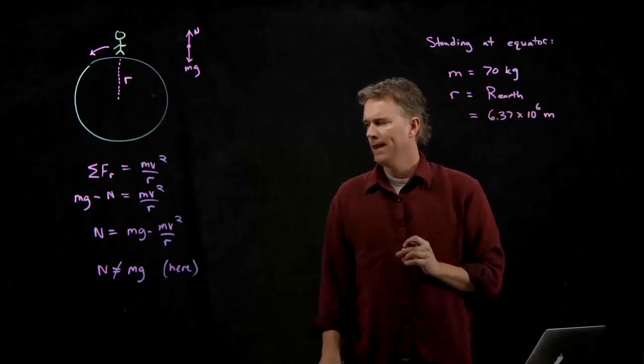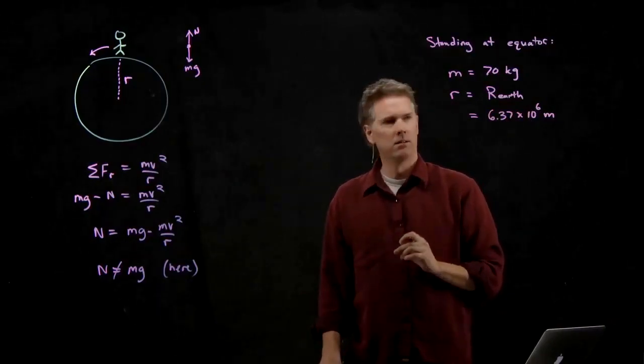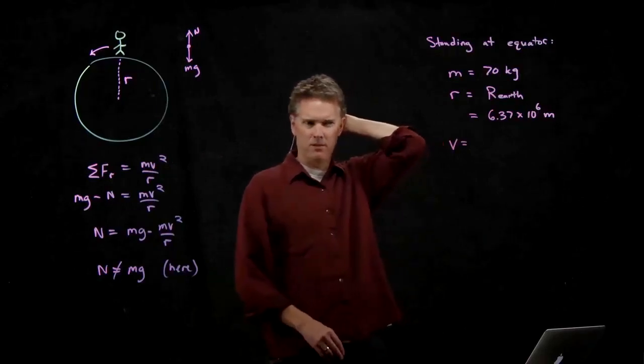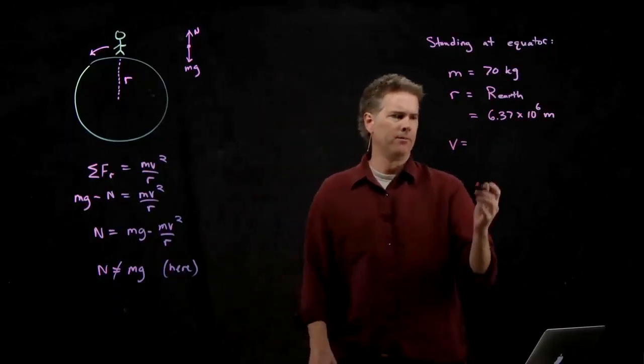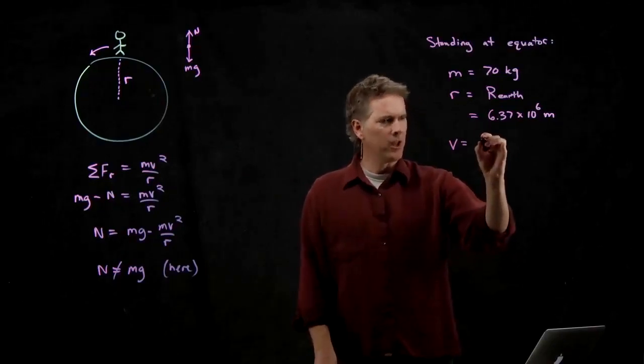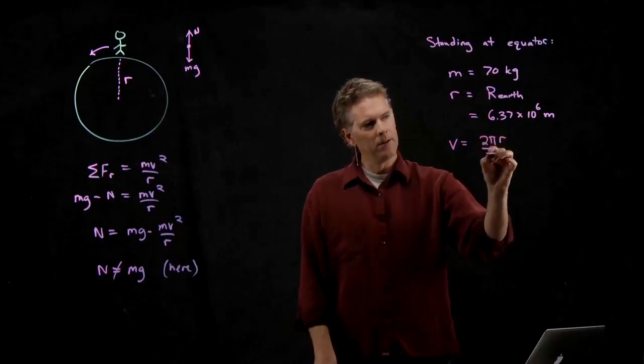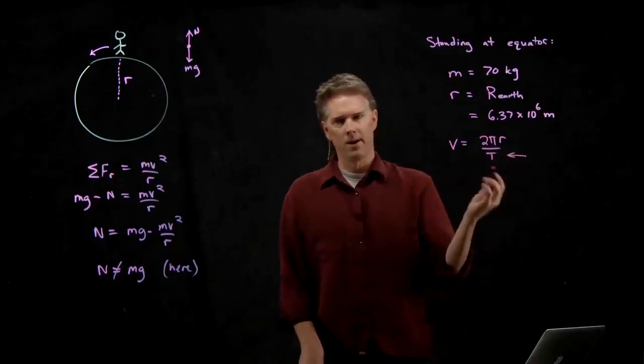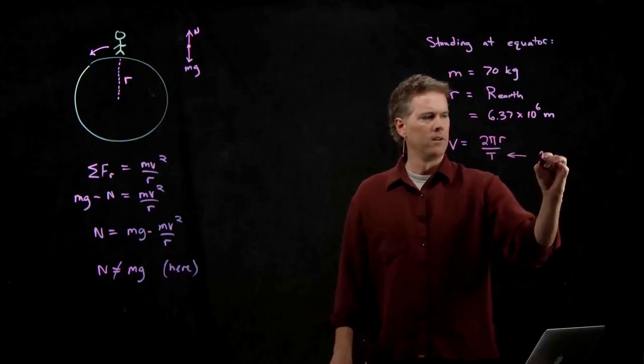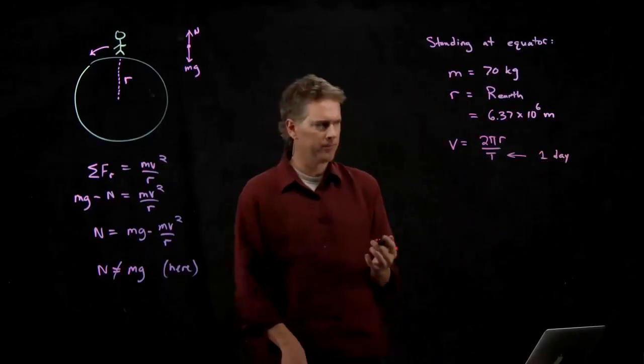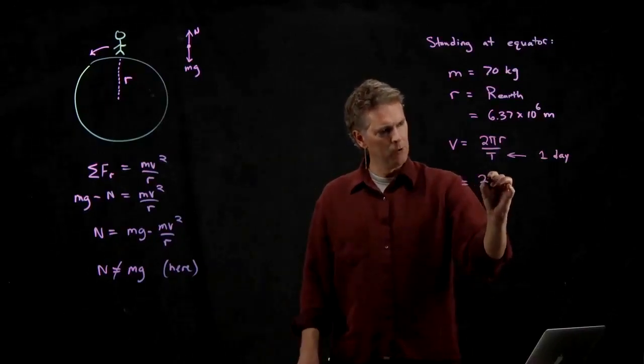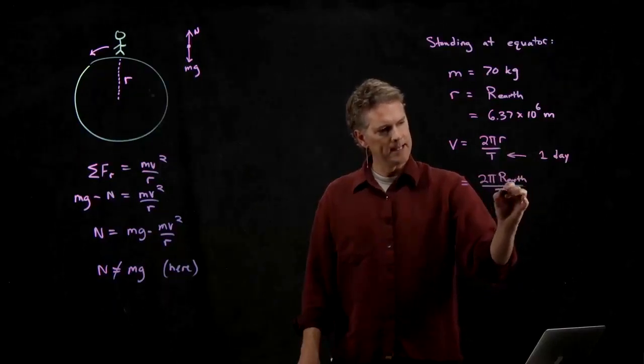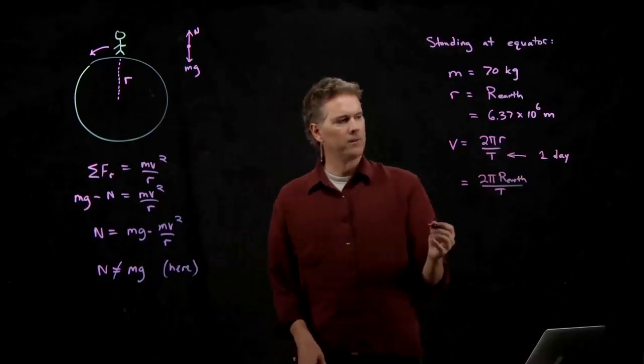What else do we need for this calculation? We need V. How do we get V? Anybody know the velocity that you're moving at if you're at the equator? I don't know. What we do know is that you go once around in how long? How long do you go once around if you're standing at the equator? One day. One day, right? 24 hours. So what does this become? It becomes 2 pi times the radius of the Earth divided by T, where T is 24 hours.